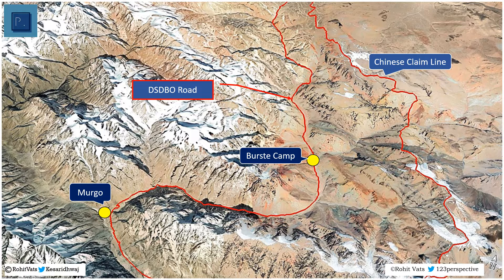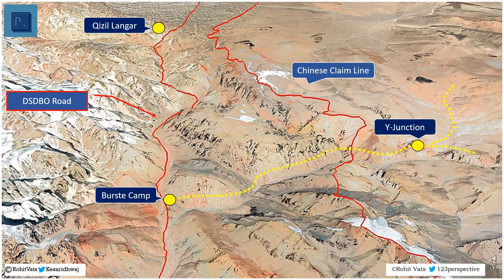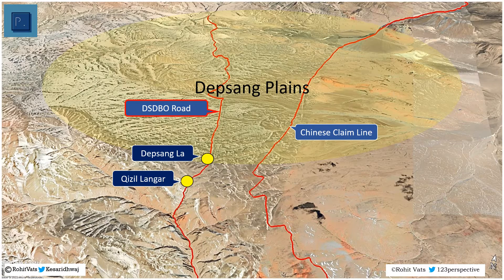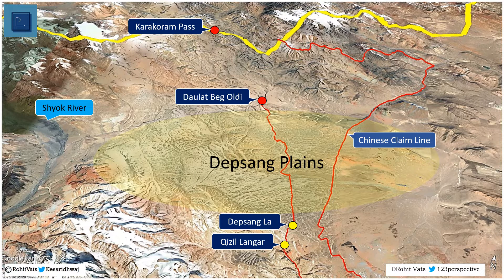Moving forward, the next landmark after Margo on the DS-DBO road is the Berthse camp. The wire junction from where Indian patrols go towards patrol point 10 and patrol point 13, and which has been blocked by the Chinese, is about 7 km east of Berthse camp. In 2013, the Chinese had actually camped a mere 1.5 km from Berthse camp during a prolonged standoff. From Berthse camp, the road goes north towards Gizhilangar, from where it enters the Depsang plains after crossing the 17,634-feet-high Depsangla pass. From Depsangla, the road heads almost straight to the actual DBO post, crossing the Chipchap river en route.